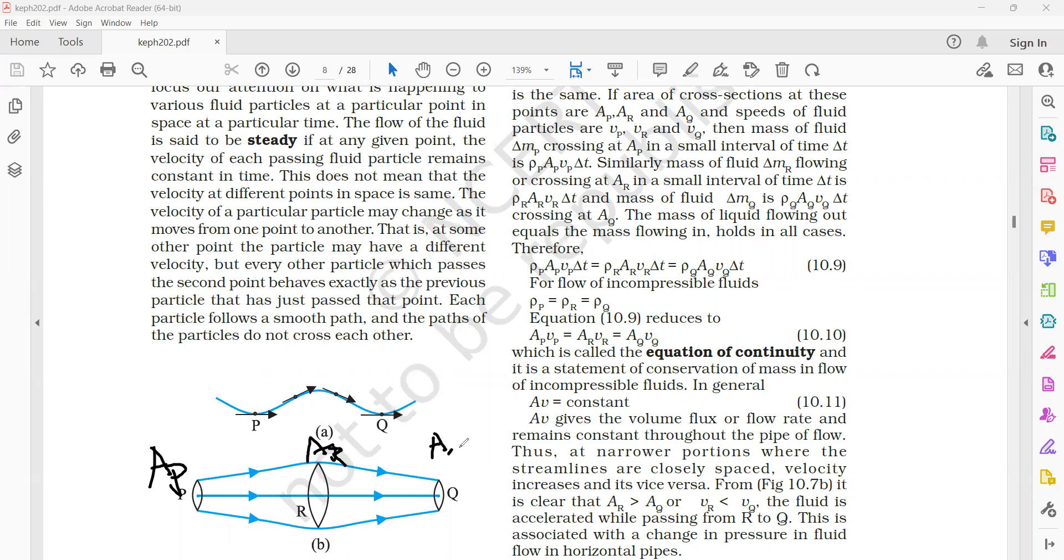And the velocity at the point P is V subscript P, and the velocity at R is V subscript R and the velocity at Q is V subscript Q. Similarly, we want to find the mass of the fluid that is passing through the point P in a small fraction of time delta T. Then the mass of the fluid is given by rho, density of the fluid, into area at P and velocity of the fluid that is V subscript P and delta T.